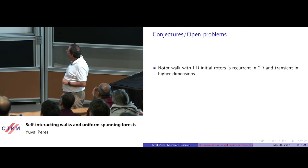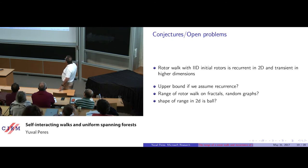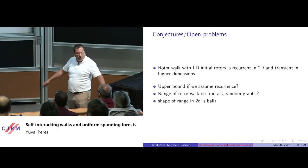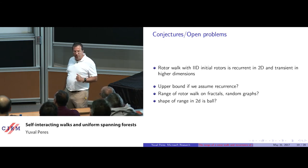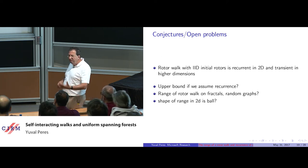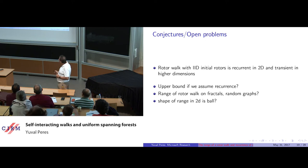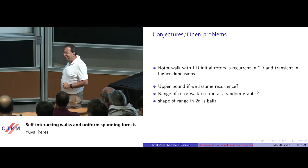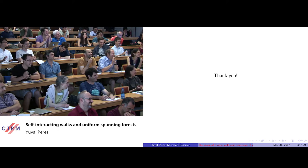Some open problems: in two dimensions, recurrence; in higher dimensions, transience — take a million dimensions, prove transience. Suppose in Z² you assume recurrence and use the structure of Z² — can you prove any upper bound like little-o of t? We don't know that either. There are lots of other lattices and fractal constructions where one might analyze the range of the rotor walk. Is the asymptotic shape in 2D actually a ball? That's the end of the first part.